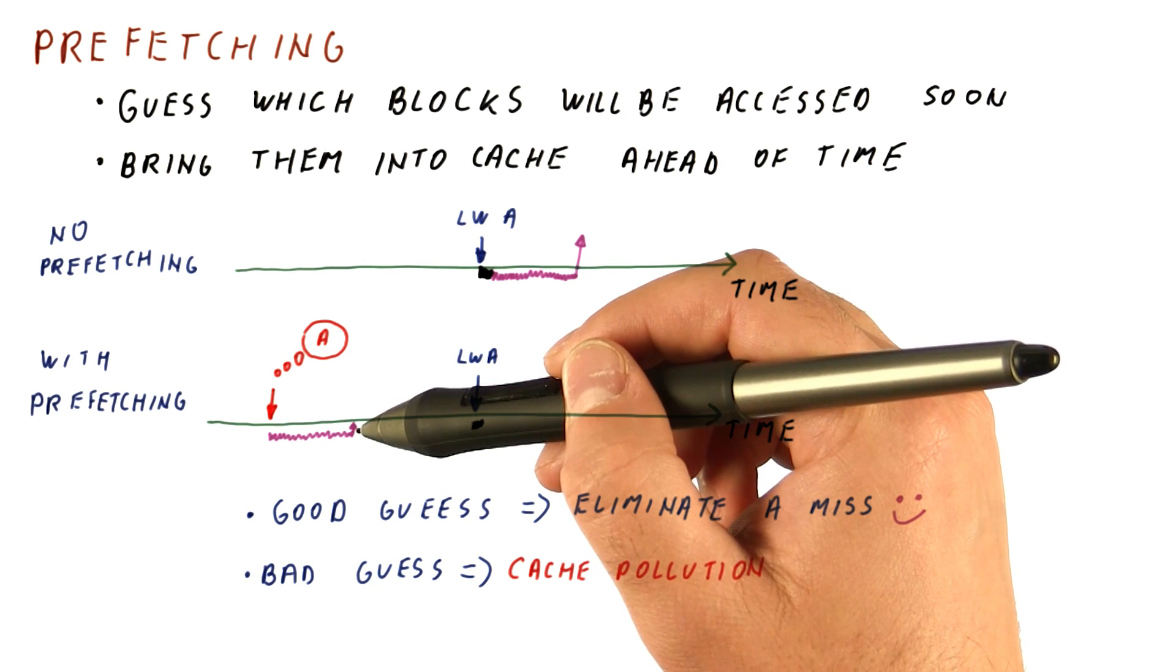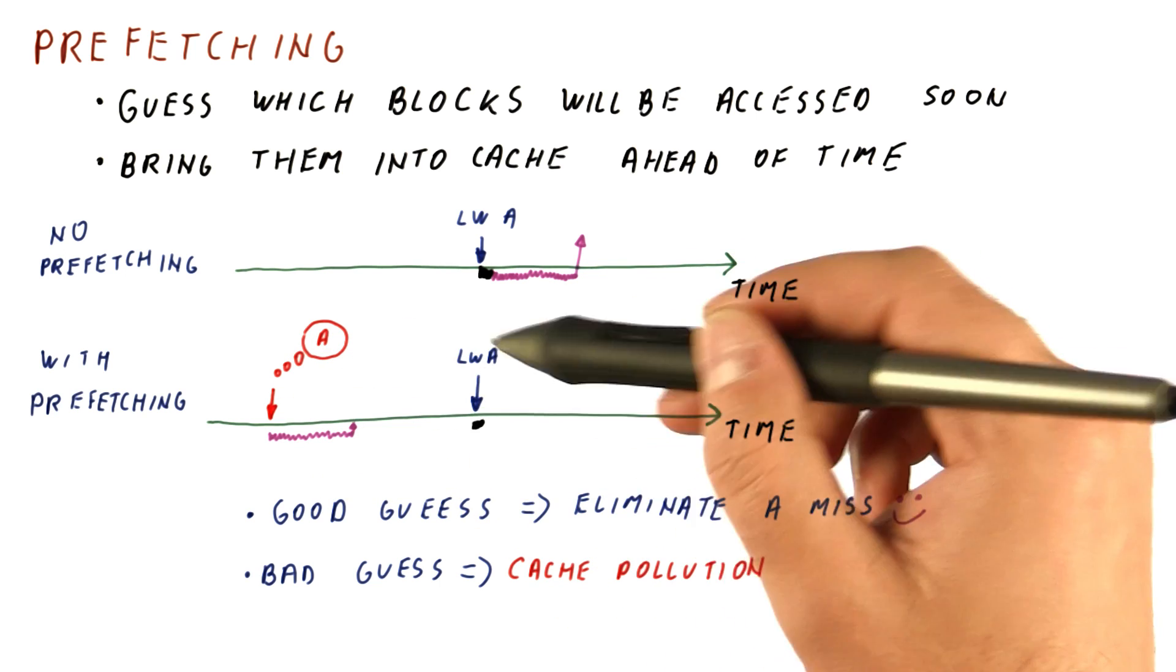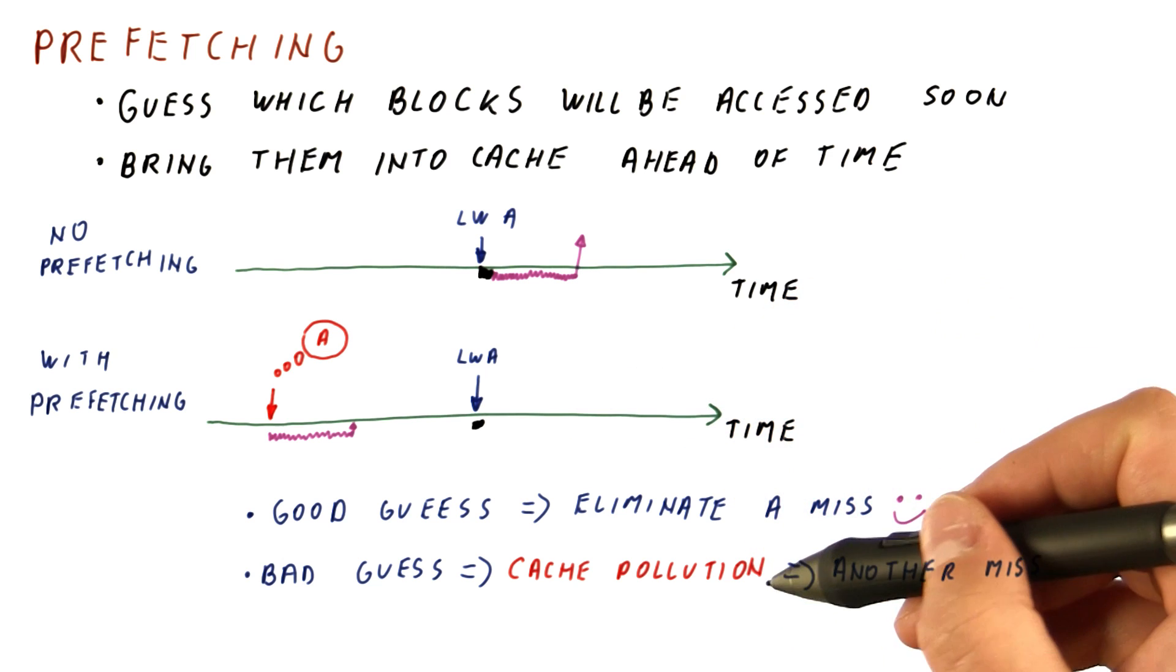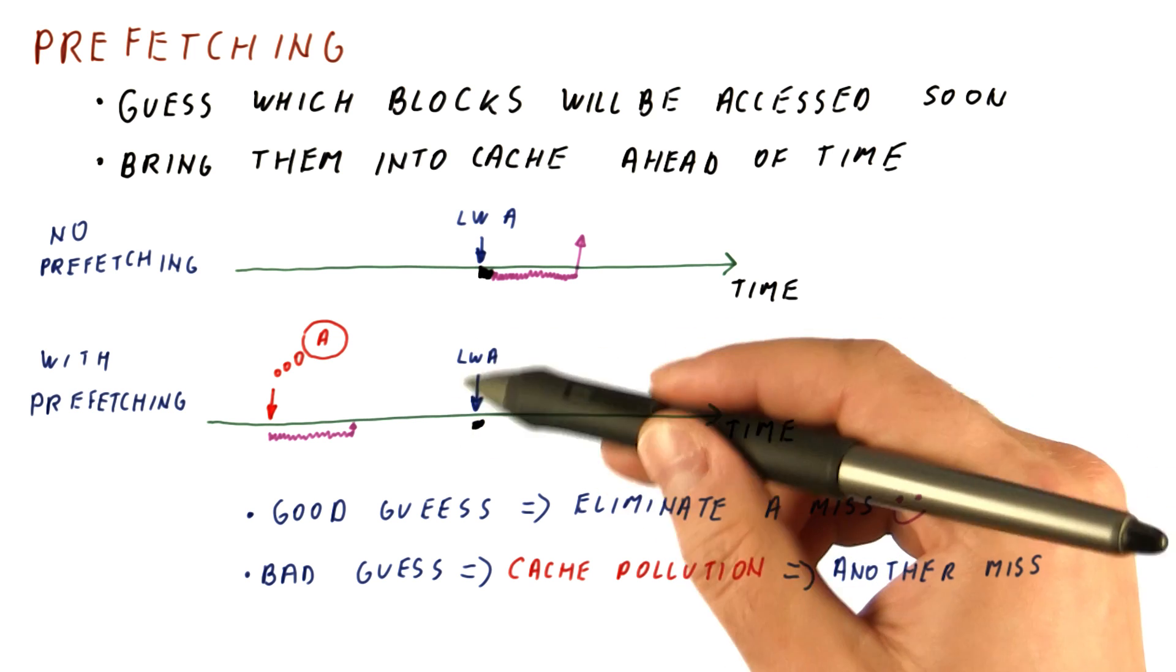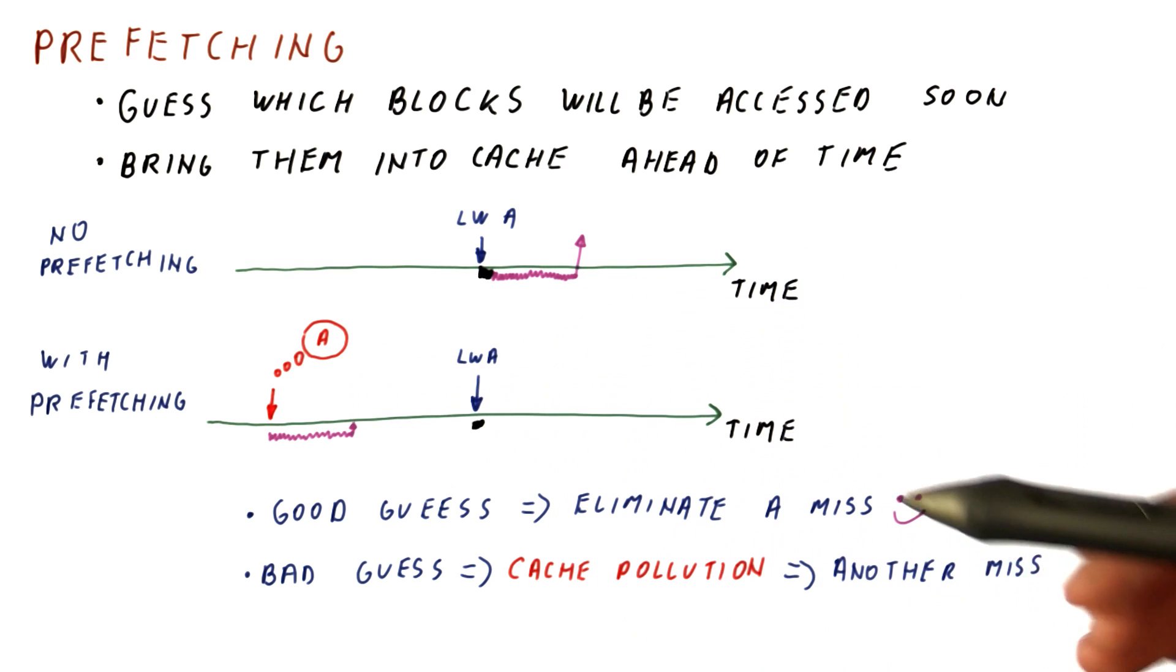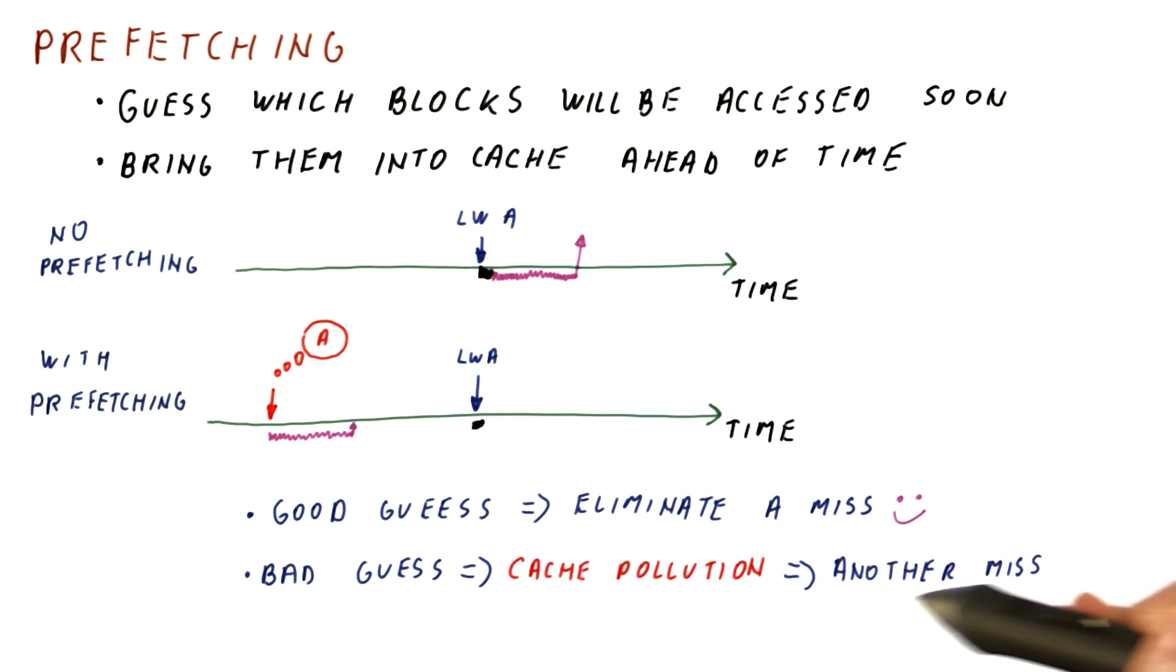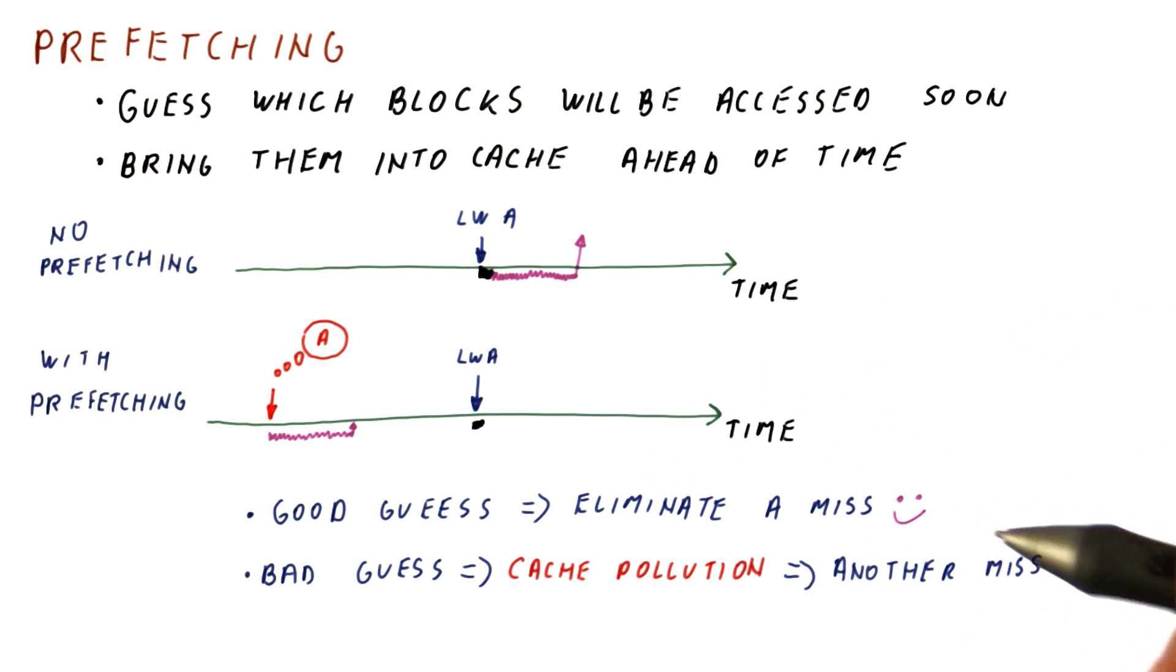If it doesn't get accessed, that means maybe it would never have been brought into the cache in the first place. And because of cache pollution, because we kick out something that might have been useful with useless data, not only did we not eliminate the miss here because we guessed wrongly, we also might have created another miss because we kicked out something that later might be accessed.